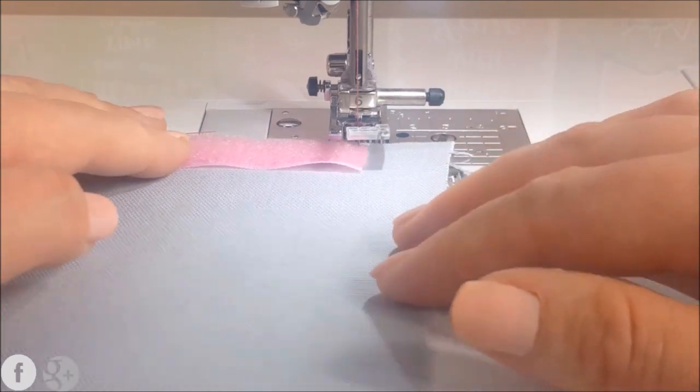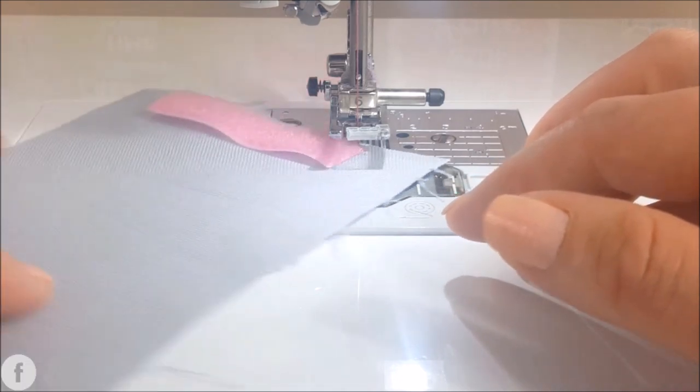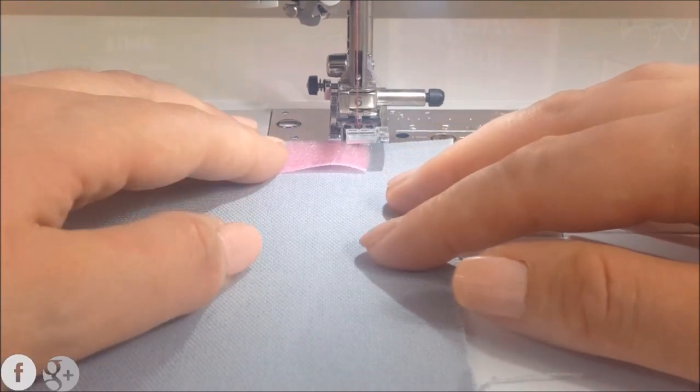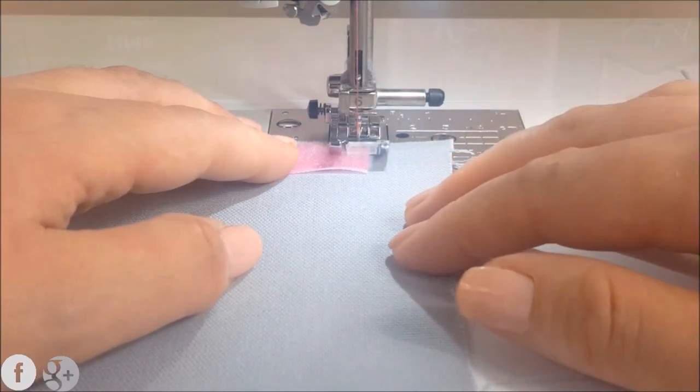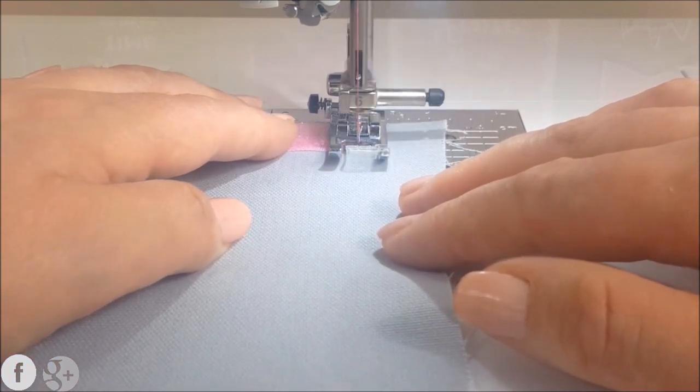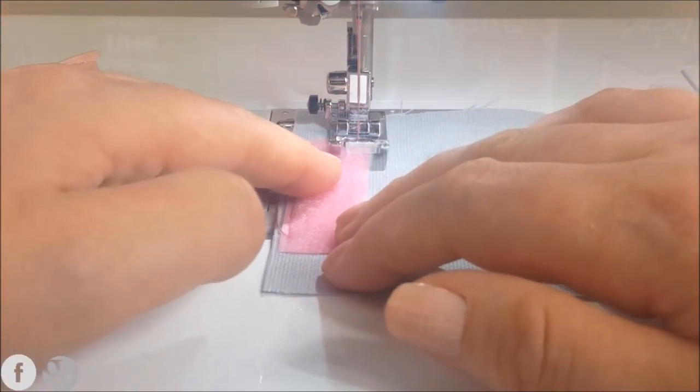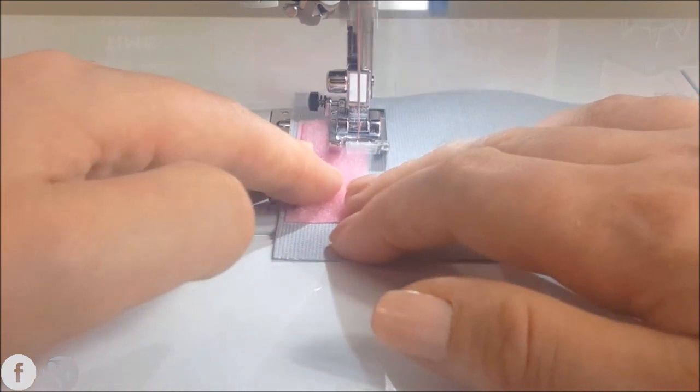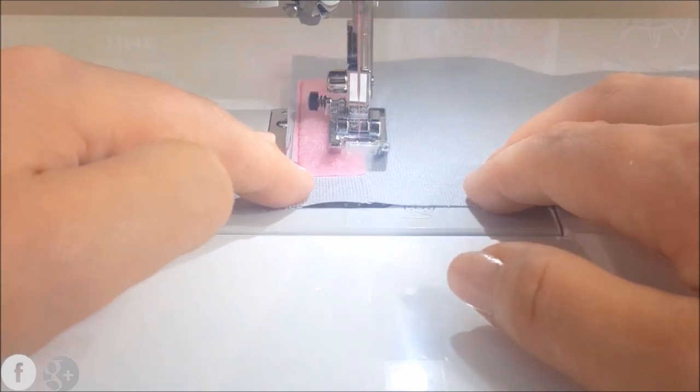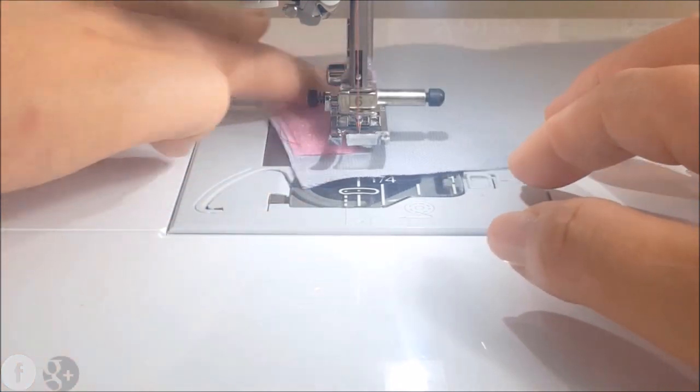So now we're pivoting around this corner and you see how easy it is to pivot around this corner with your needle in the downward position. And then we're going to pivot again at each corner.